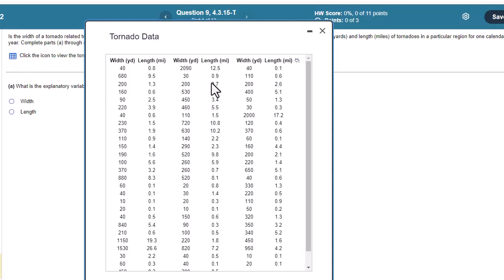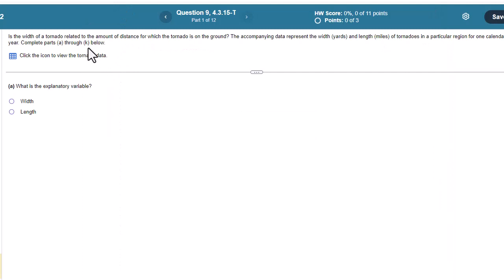Let's open up our tornado data set. We can go ahead and copy this and open in StatCrunch. What we want to note is the width explains how long it's on the ground. So how wide the tornado is is the explanatory variable.